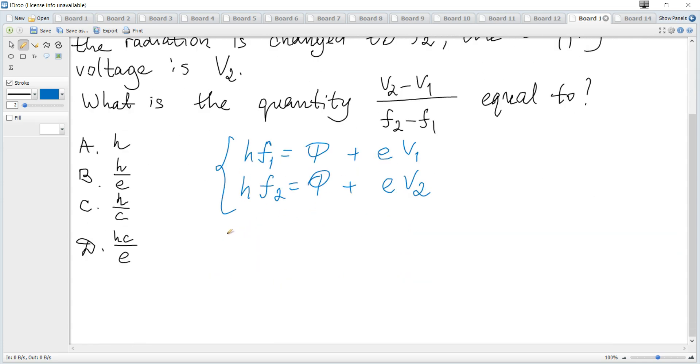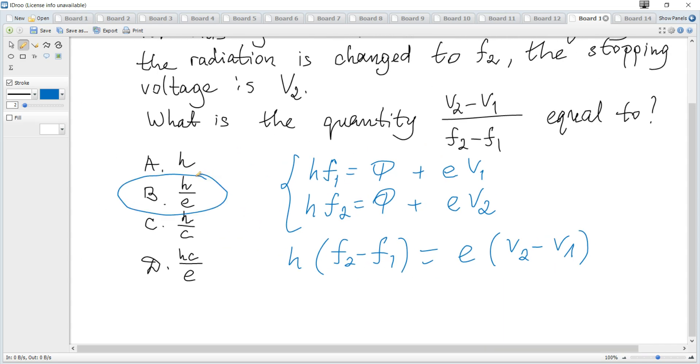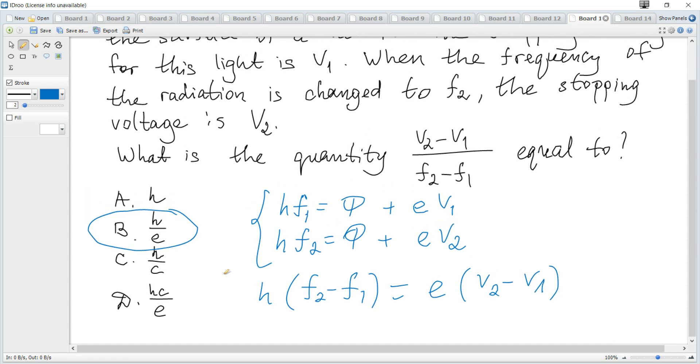Then just subtract to get h(f2 - f1) equals e(V2 - V1). And you can see that (V2 - V1)/(f2 - f1) is h/e. So B is correct, and that's all for this question.